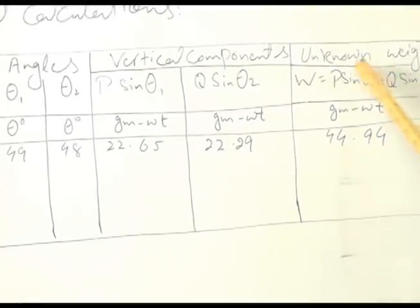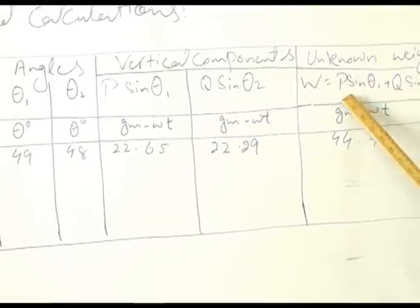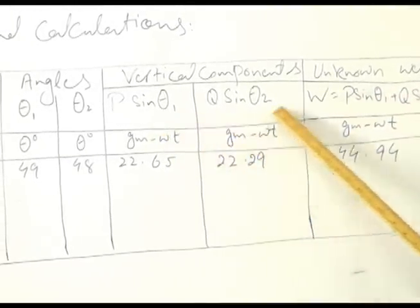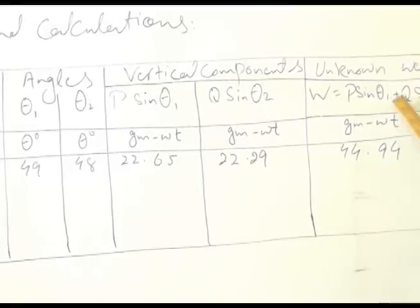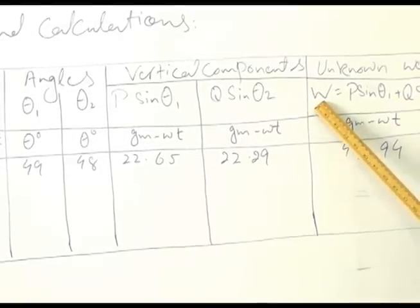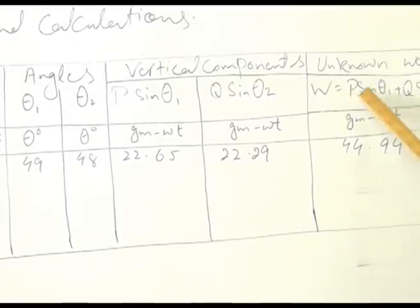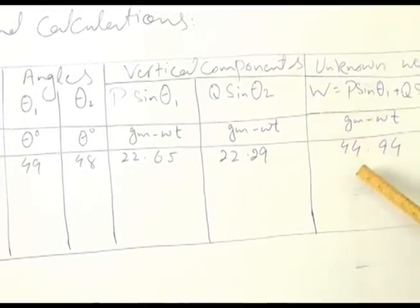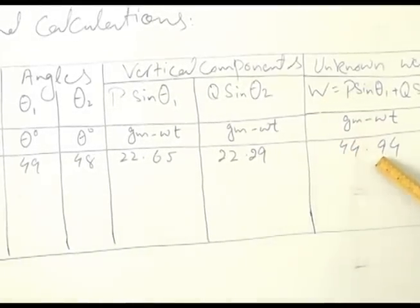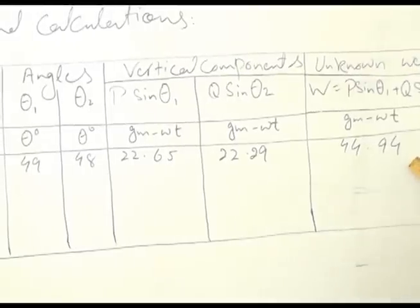Now putting the vector addition method, the sum of these two vertical components will give us the value of unknown weight. P sine theta 1 plus Q sine theta 2 is equal to unknown weight W, that is 44.94 gram weight.